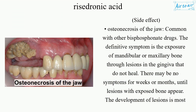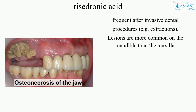Side effect: Osteonecrosis of the jaw. Common with other bisphosphonate drugs. The definitive symptom is the exposure of mandibular or maxillary bone through lesions in the gingiva that do not heal. There may be no symptoms for weeks or months, until lesions with exposed bone appear. The development of lesions is most frequent after invasive dental procedures, e.g. extractions. Lesions are more common on the mandible than the maxilla.